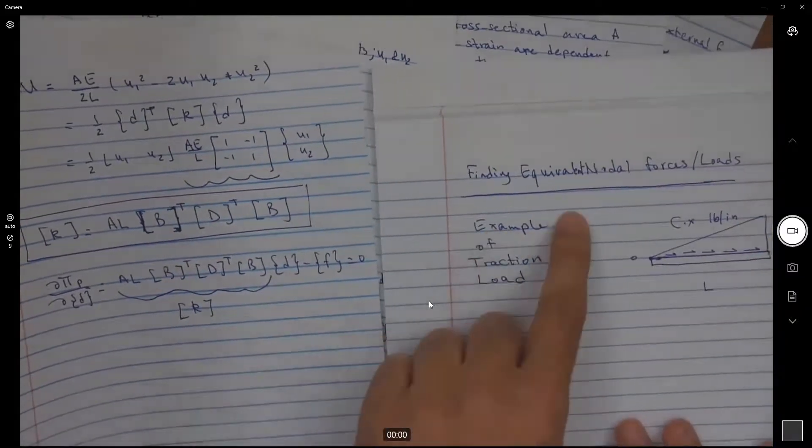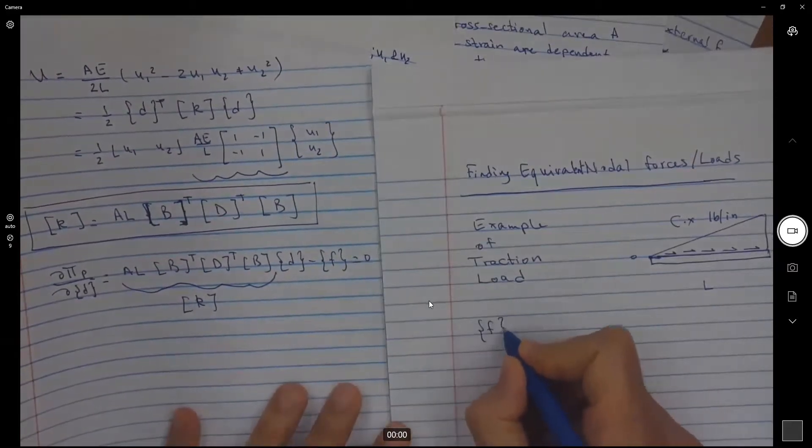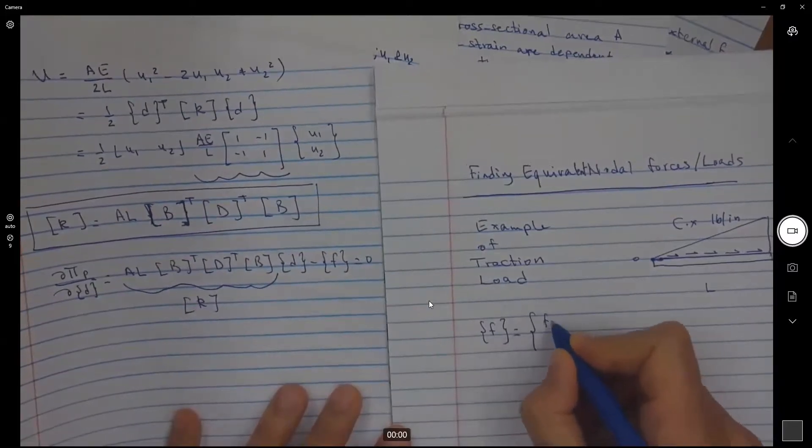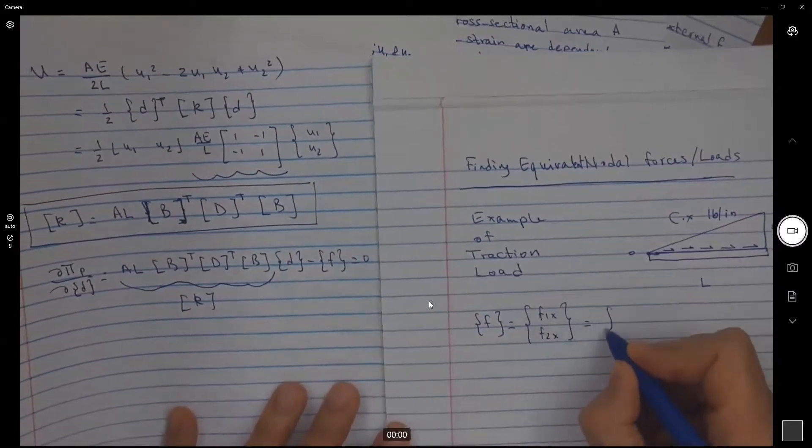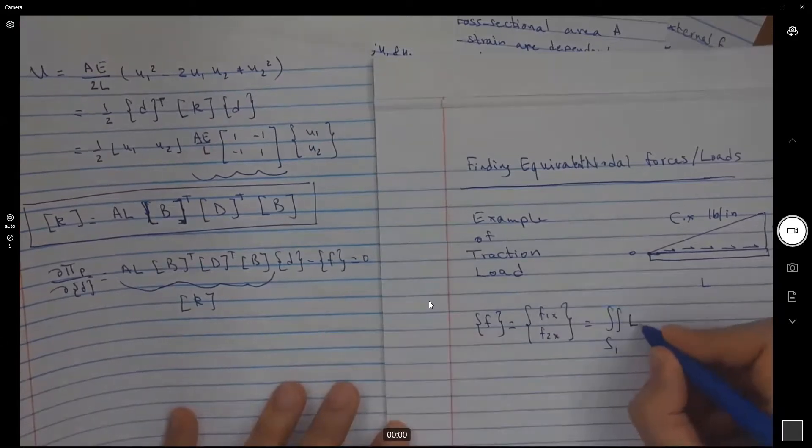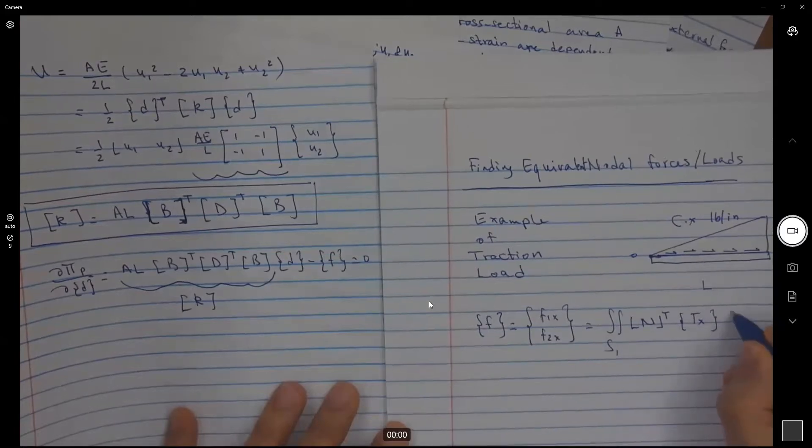The nodal forces for that traction force F are going to be F1x and F2x. These are equal to the double integral over surface S1 multiplied by N transpose times the traction forces dx ds.